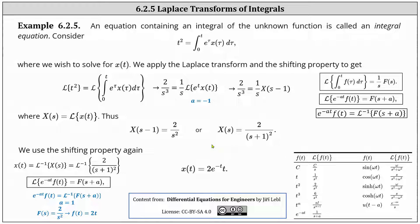From here, to determine x(t), we take the inverse Laplace transform of X(s), which is the inverse Laplace transform of two divided by the square of the quantity s plus one. To find this, we again use the shifting property: e to the power of negative at times f(t) equals the inverse Laplace transform of F(s plus a). In our case, a equals one and F(s) — without the shift — is two divided by s squared. Taking the inverse Laplace transform gives f(t) equals two t.